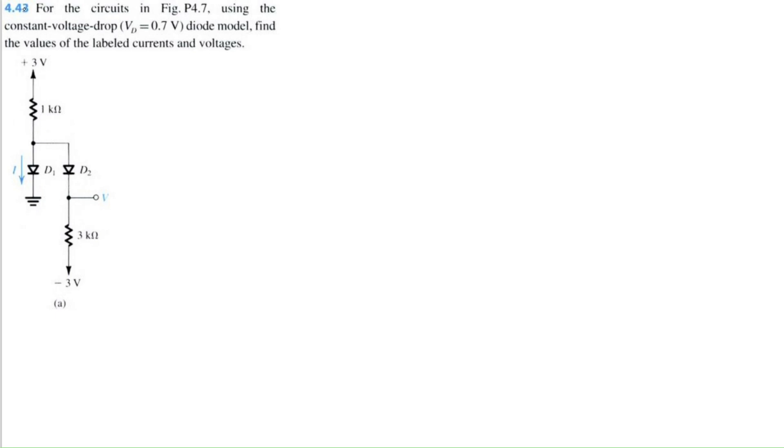Let's solve problem 4.43 for microelectronics circuits 8th edition by Sedra and Smith. So we have some circuits here and we're going to use the constant voltage drop diode model, VD equals 0.7 volts, to find the value of the labeled voltage and currents.